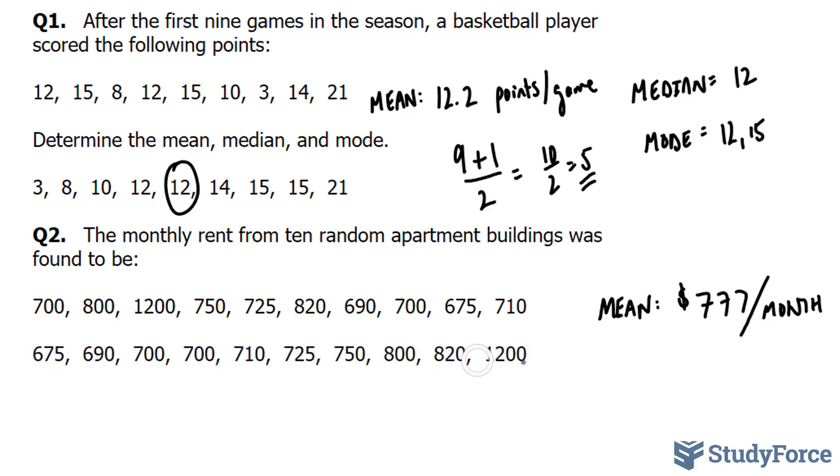Now that we have the numbers from least to greatest, we have to locate the number that is in the middle. What we do is we take the amount of numbers, in our case it's 10, add 1 to it as we did before, and then divide by 2.